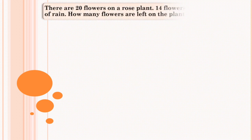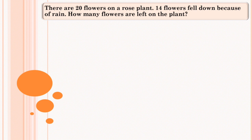There are 20 flowers on a rose plant. 14 flowers fell down because of rain. How many flowers are left on the plant? Let's start.